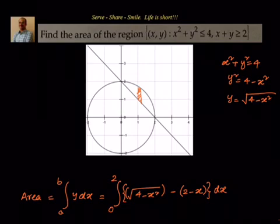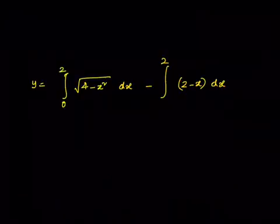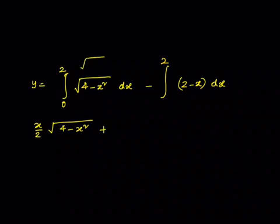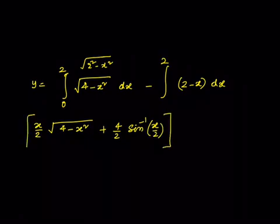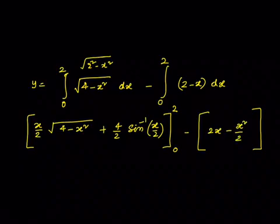Now we integrate. The term √(4 − x²) is of the form √(a² − x²), where a = 2. The standard integration formula gives: (x/2)·√(a² − x²) + (a²/2)·sin⁻¹(x/a). With a = 2, this becomes (x/2)·√(4 − x²) + (4/2)·sin⁻¹(x/2). For the second part, ∫(2 − x)dx = 2x − x²/2. We evaluate both from 0 to 2.